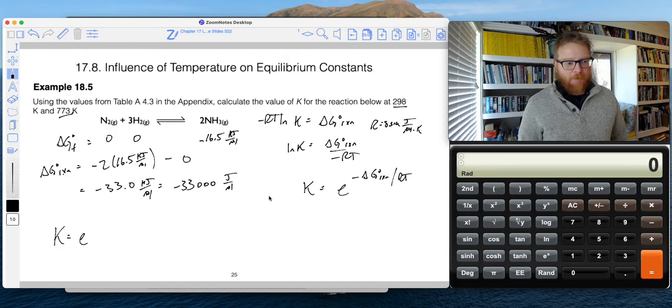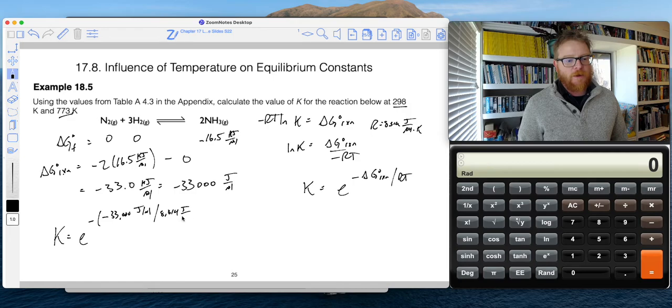So now this negative sign is part of the equation. So if I have a negative sign here, negative, negative makes a positive. So we have to remember that. So that's going to be negative, negative 33,000 joules per mole. And of course, that's all divided by 8.314 joule per mole K times, first we'll do the 298K. So that's going to be one calculation.